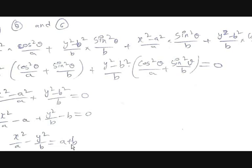We started with two equations — x/A·cosθ + y/B·sinθ = 1 and x·sinθ − y·cosθ = √(A²sin²θ + B²cos²θ) — and simplified them to a single equation: x²/A + y²/B = A + B. This equation contains no trigonometric ratios or theta. This is how you eliminate the angle.